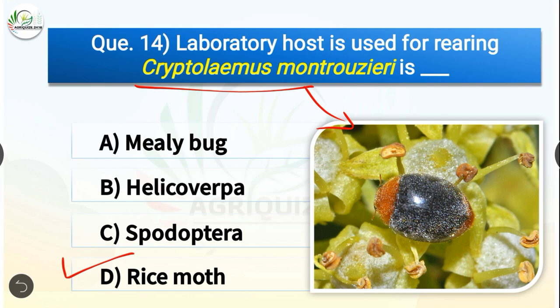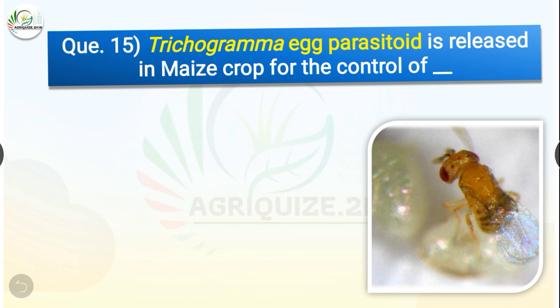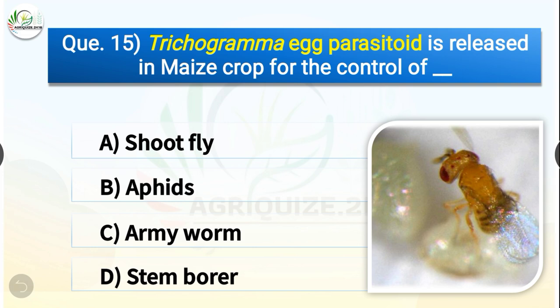Question number fifteen: Trichogramma egg parasitoid is released in the main crop for the control of dash. The options are shootfly, aphids, armyworm, or stem borer. The correct answer is option D — stem borer. Trichogramma egg parasitoid is released in the main crop for the control of stem borer.